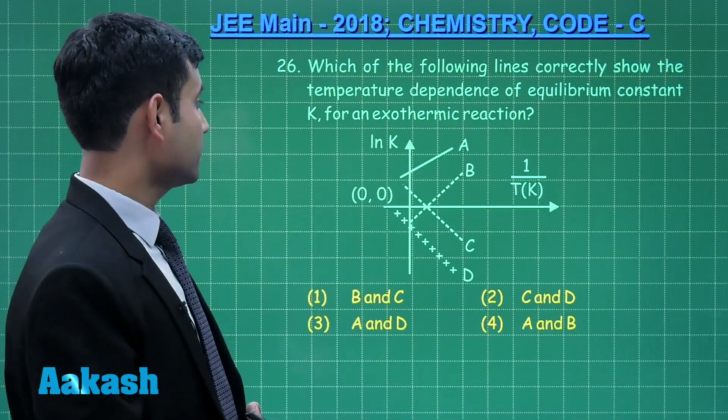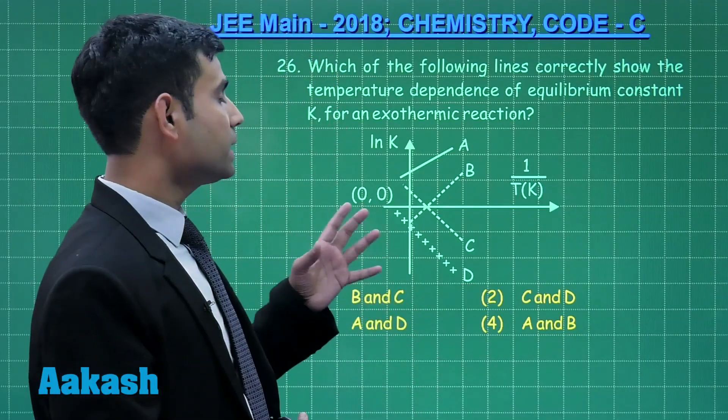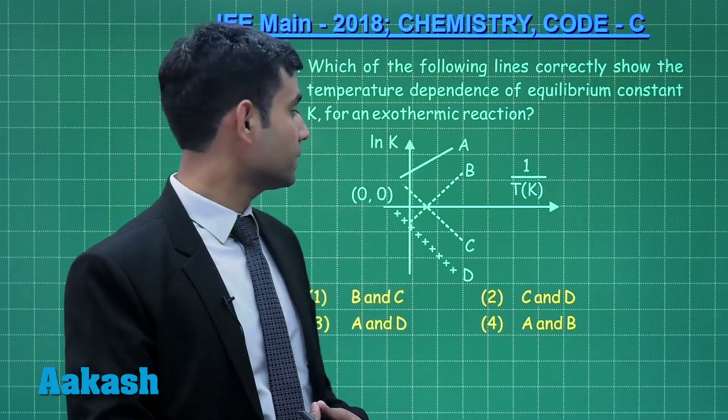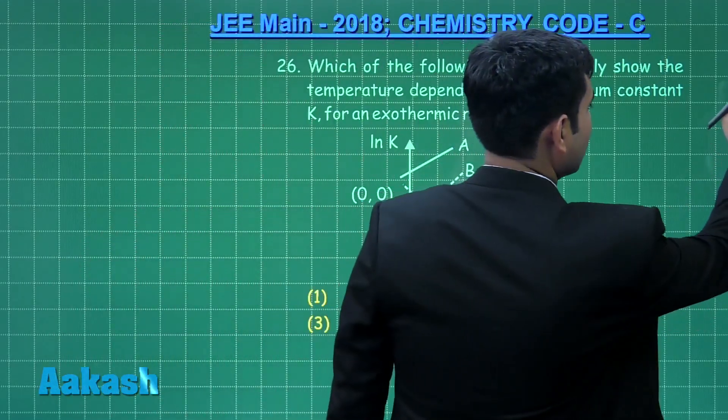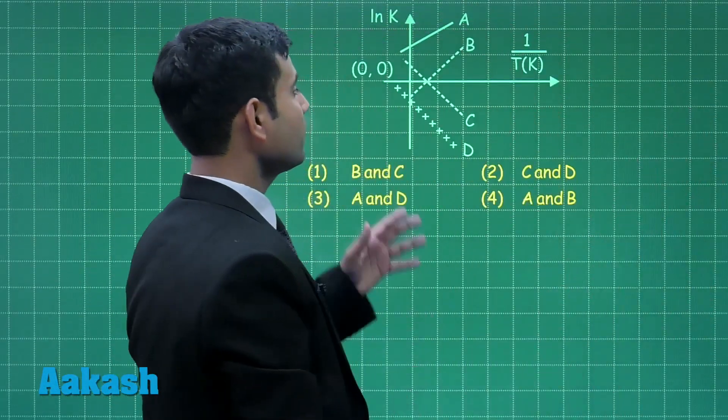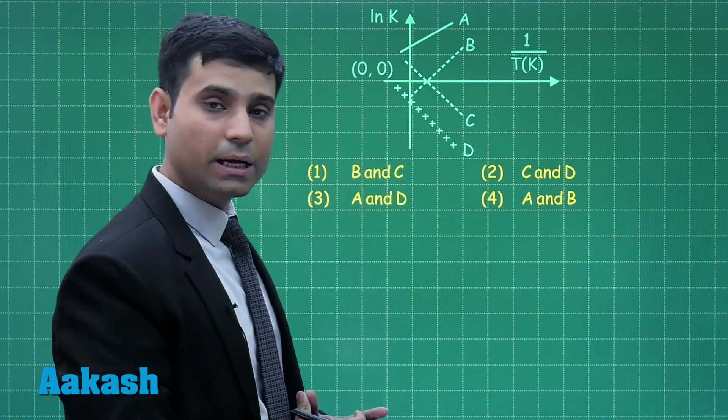Question number 26 which says which of the following lines correctly show the temperature dependence of equilibrium constant K for an exothermic reaction. Here we have a graph between natural log K versus 1 upon T, their temperature is in Kelvin.